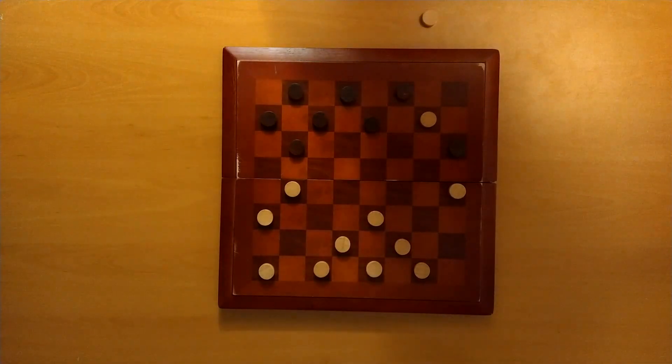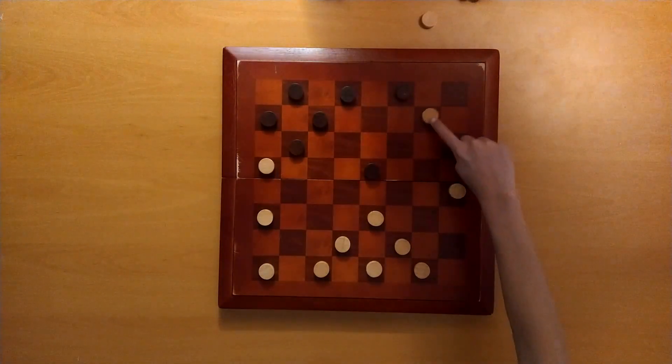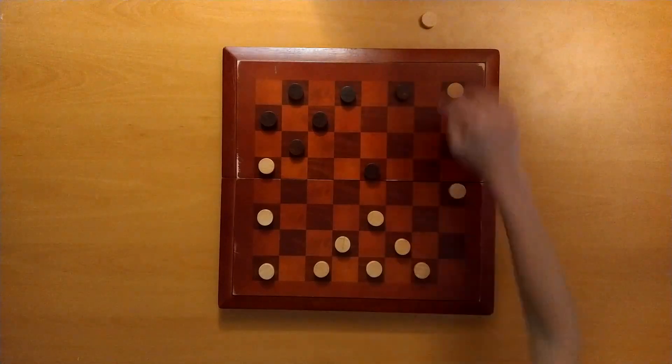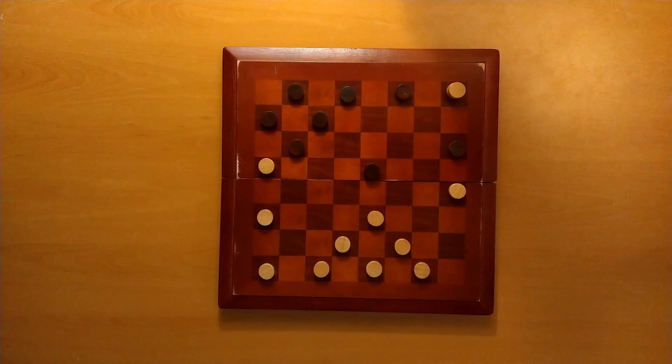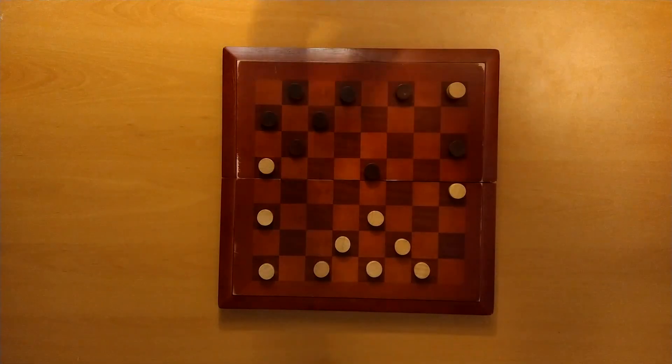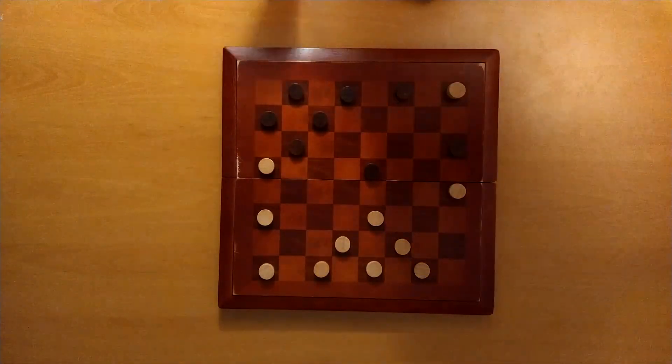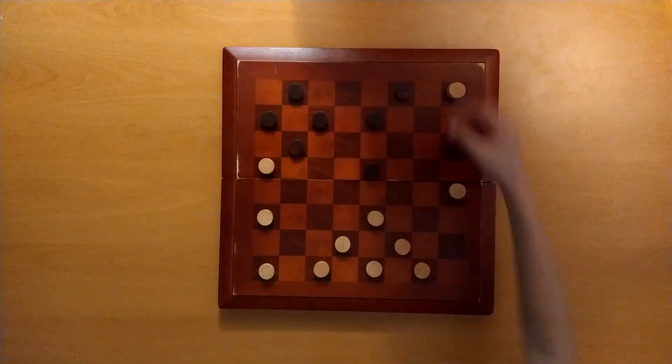When a piece reaches the other end of the board, it promotes to a king. Place another checker on top of it or flip the side with the crown. That piece plays normally but it now may move backwards. Kings can be captured.